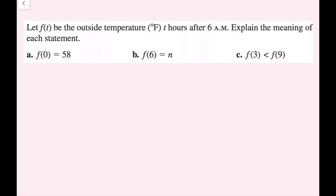Let f of t be the outside temperature in degrees Fahrenheit, t hours after 6 a.m. Explain the meaning of each statement. So in this case, f of 0 equals 58. Well, 0 is going to be our t value because this is f of t. So this means 0 hours after 6 a.m., which is just 6 a.m. And then this whole entire function value, f of t, is just the temperature. This means that at 6 a.m. it was 58 degrees.